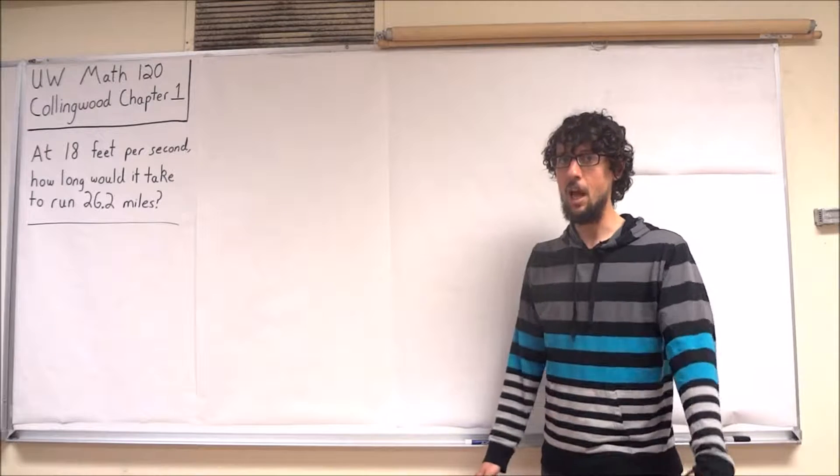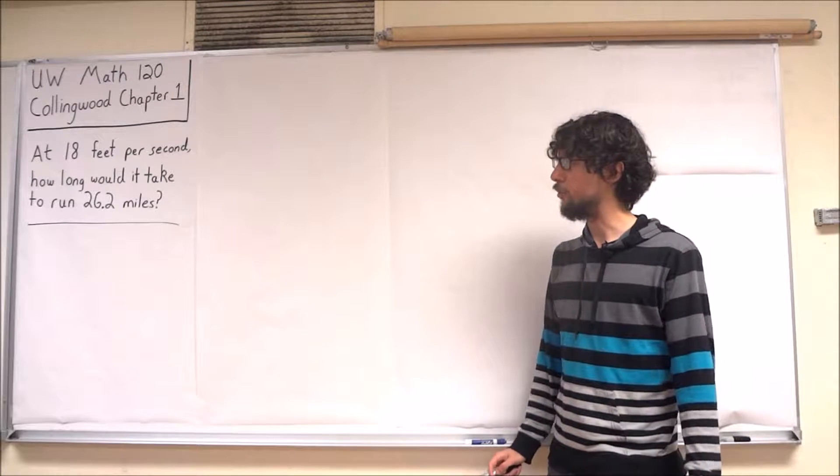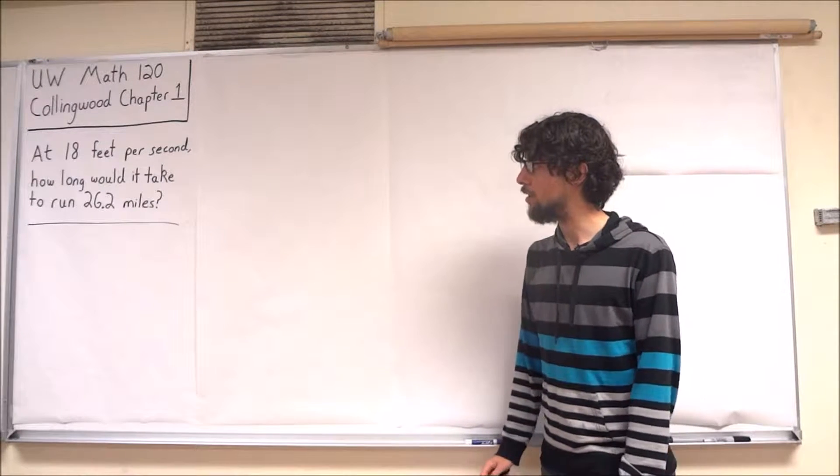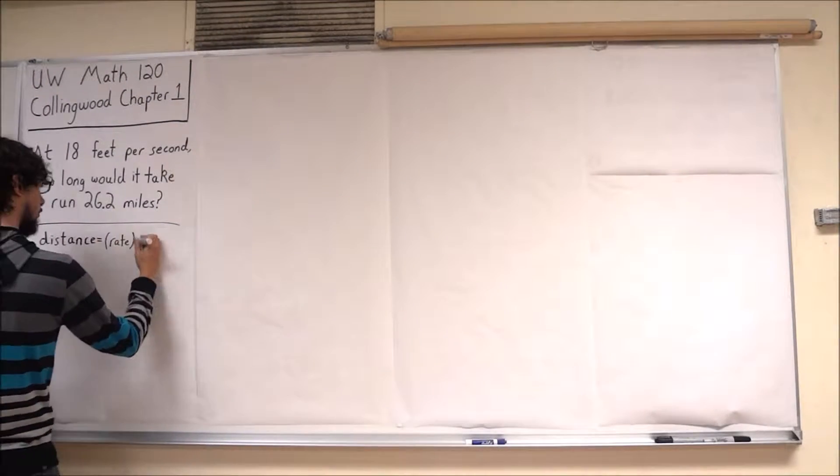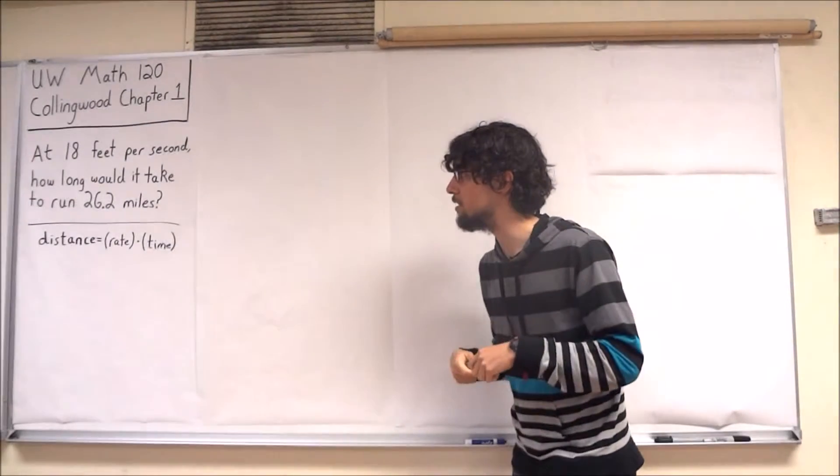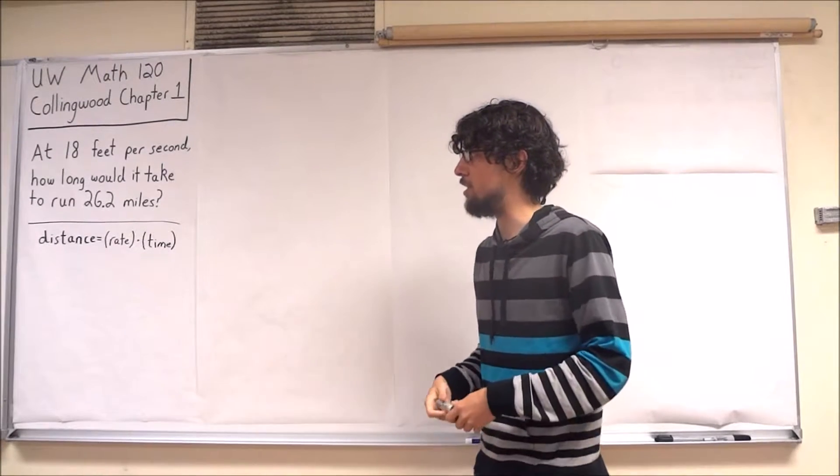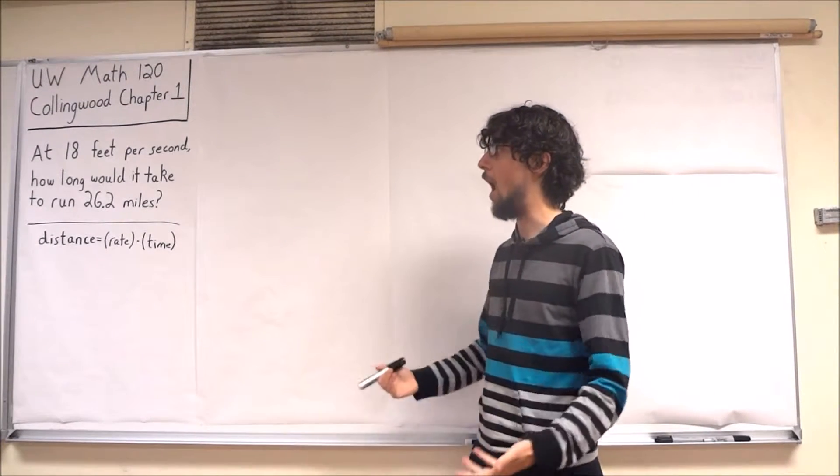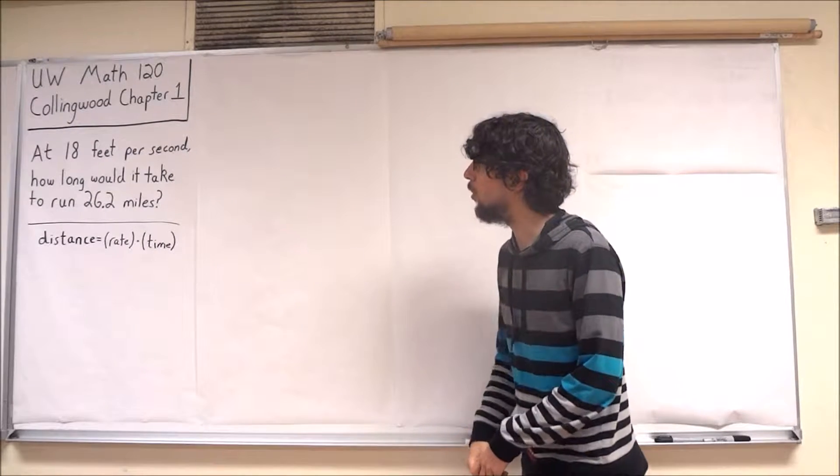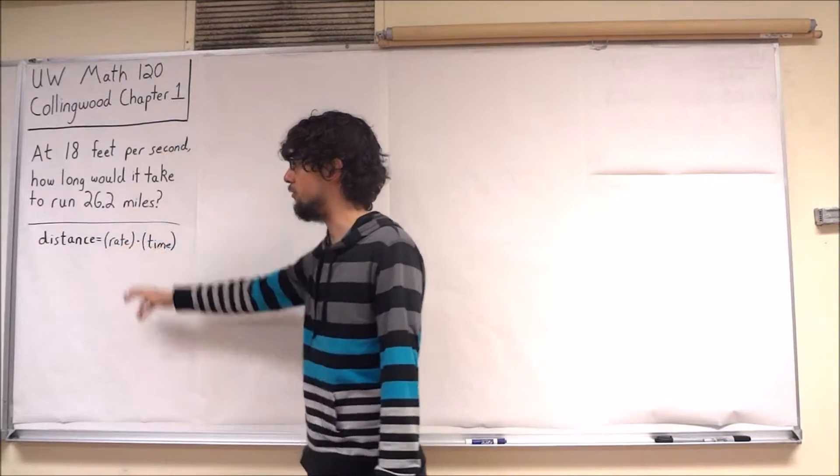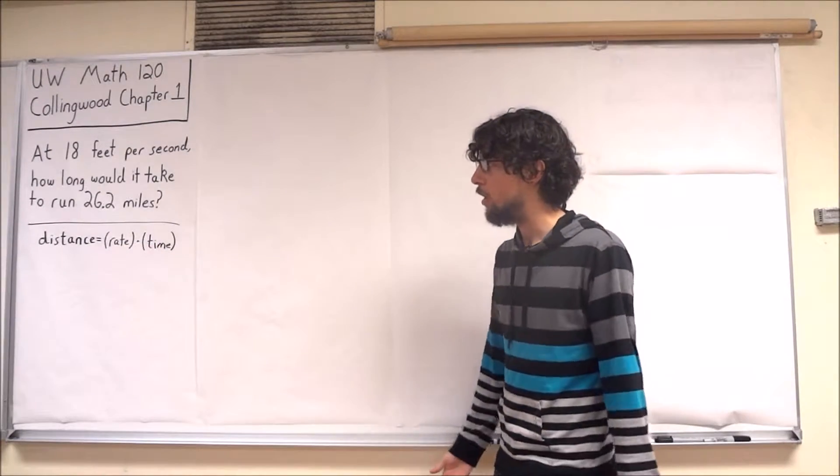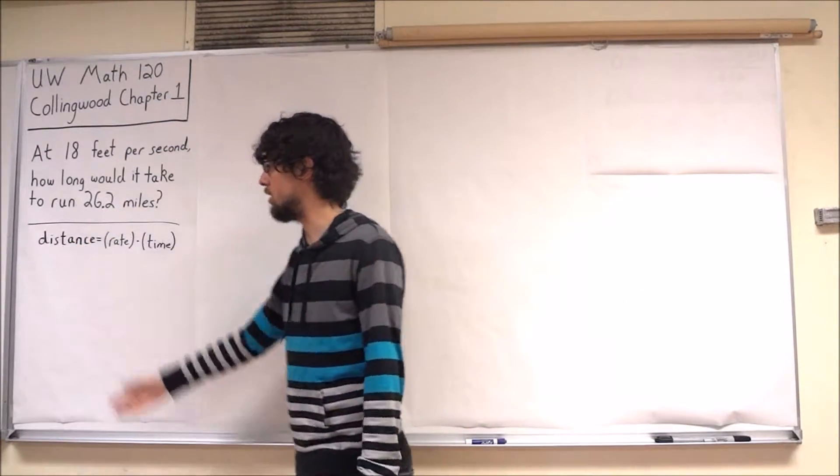So there's a couple of key ideas floating around here. The first is this equation, which I hope is familiar. We have that the distance traveled is equal to the rate, or the speed, times the time traveled. So we know the rate of 18 feet per second, and we know the distance of 26.2 miles.